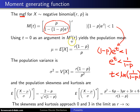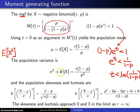If you take two derivatives of the moment generating function and plug in t equals 0, that gives you the expected value of x squared. You can then use the shortcut formula to get the population variance, sigma squared, which equals the variance of x. Again, very tractable, very nice expressions.